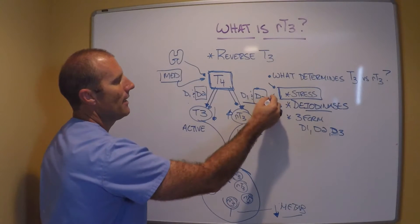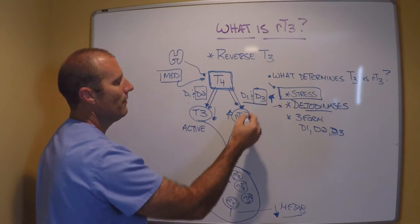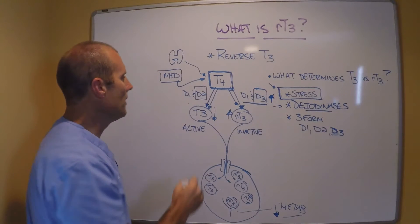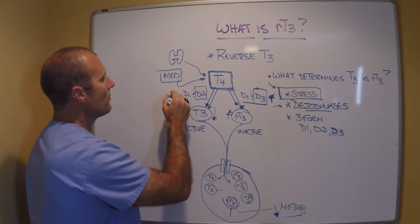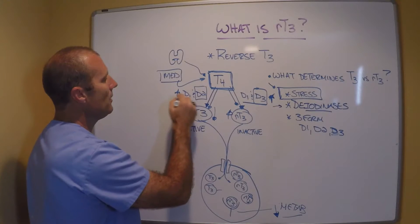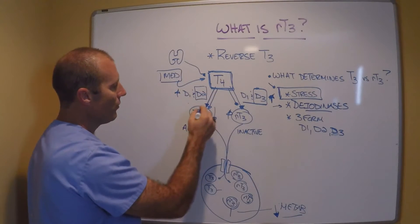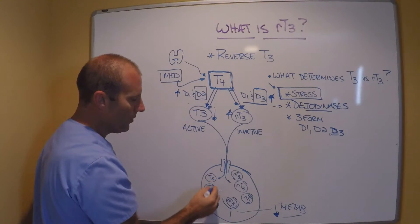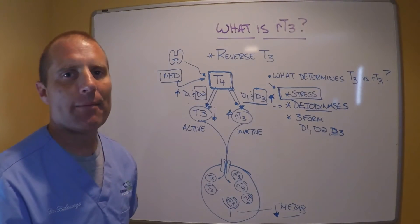Increased stress, I get increased D3 activity, I get more reverse T3. If I have lower amounts of stress, I get increased D2 activity, more T4 to T3, more active hormone getting into the cell, and that's going to drive my metabolism.